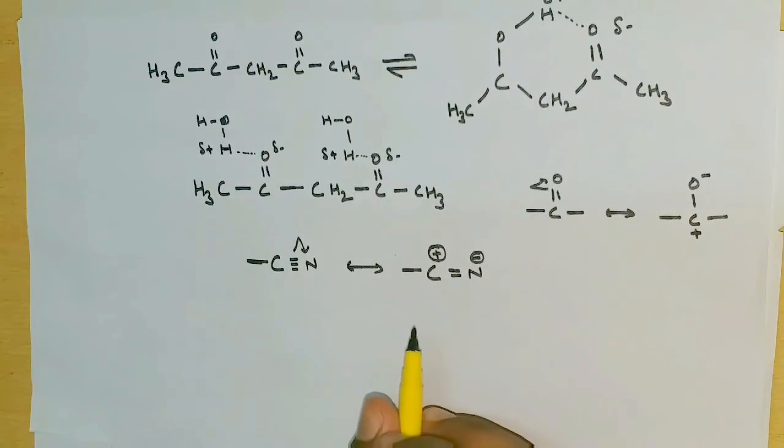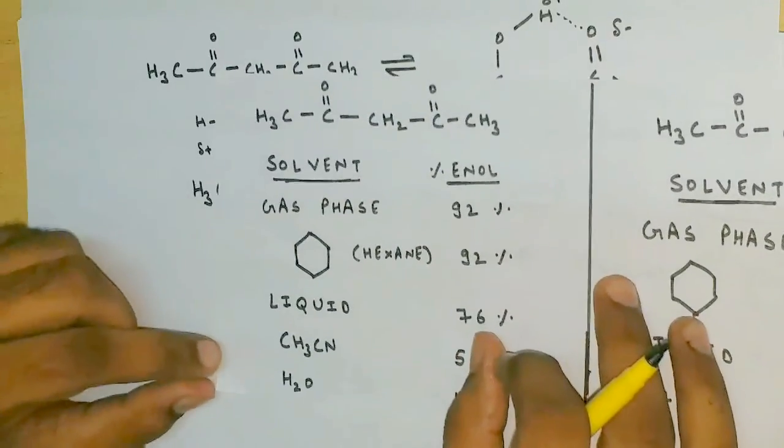So we can say that the polar solvents will enhance the stability of keto and hence reduce the enol content.